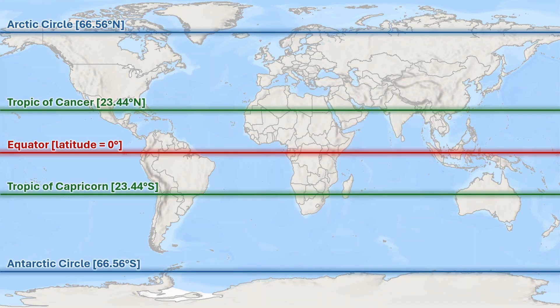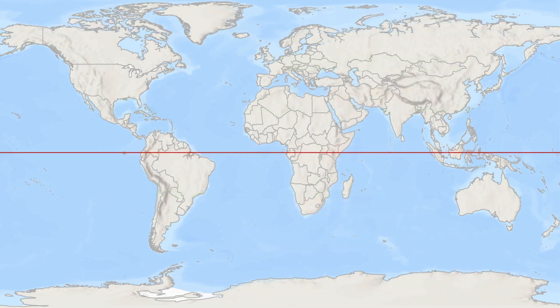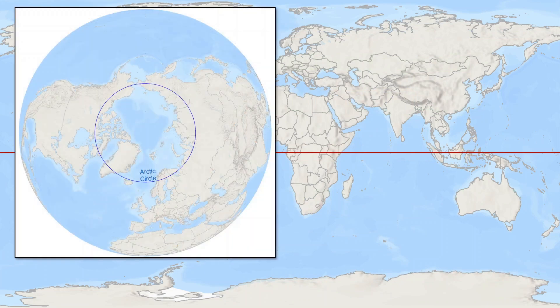This set of special parallels relate to latitudinal patterns of insolation which controls global climatic zones. For latitudes of interest in terms of land-ocean coverage, there is a range of arctic latitudes spanning only seawater or sea ice above 84 degrees north over the Arctic Ocean, shown here in a polar projection on which parallels plot as circles again.